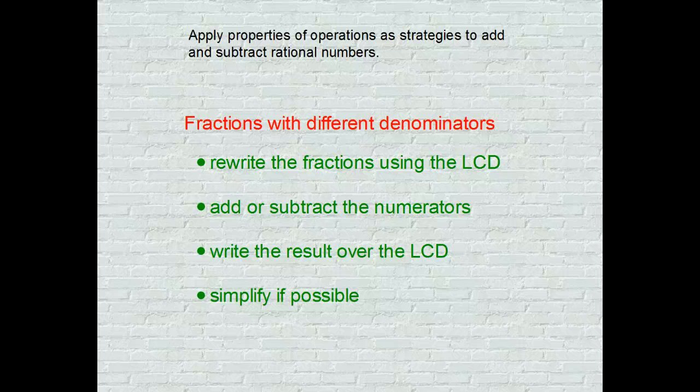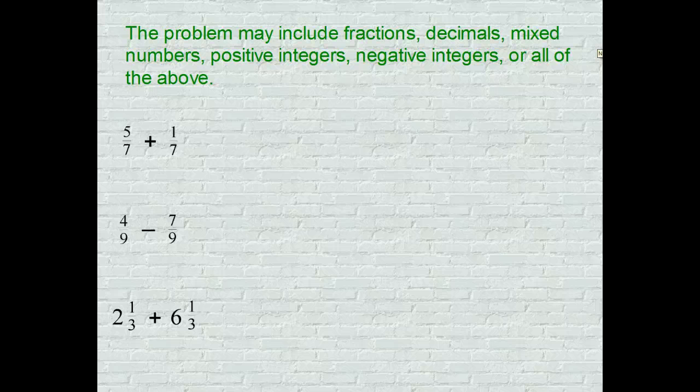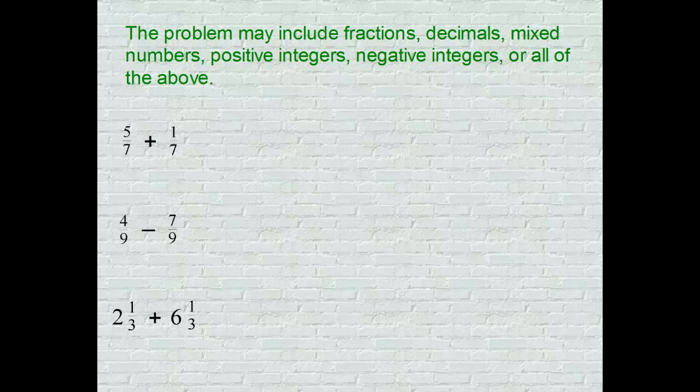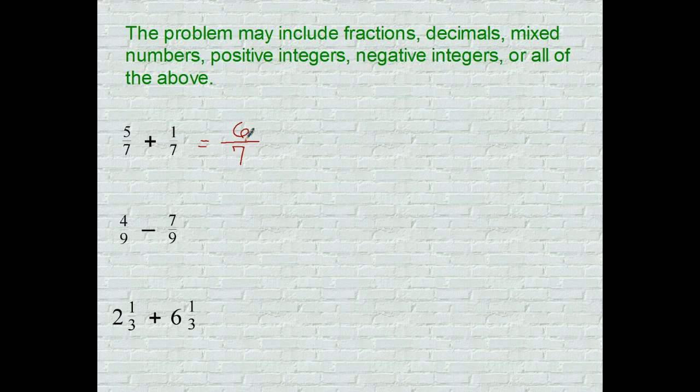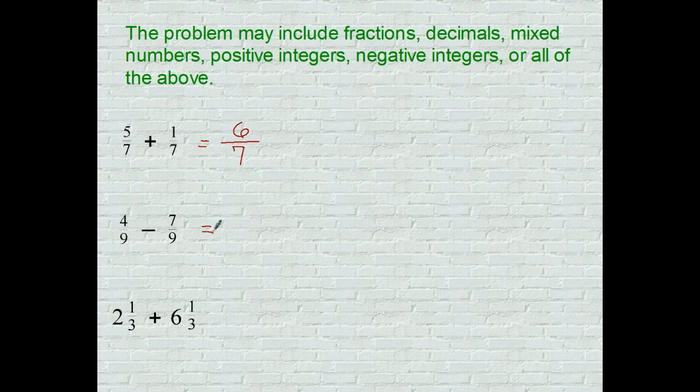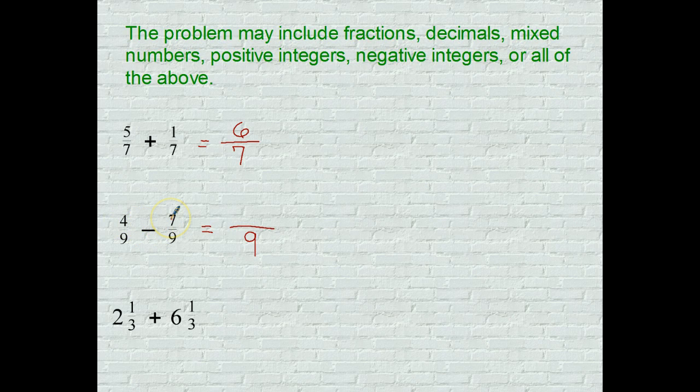In the first three problems, you're going to notice we have fractions in the first two and some mixed numbers in the last one. Let's work this out together. Here we have a common denominator in the first problem of seven. Since the common denominator is seven, all we have to do is add the numerators. So keep your denominator seven, five added to one is six, and check to make sure that is simplified, and it is. Problem two: common denominators? Yes, we have a nine and a nine. That's great for us, so let's keep that a nine, and by rule we subtract the numerators. Four minus seven is a negative three.